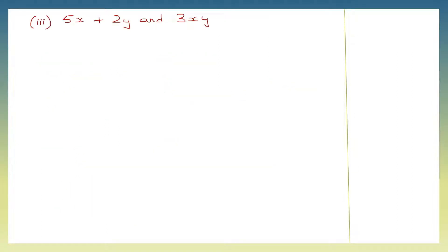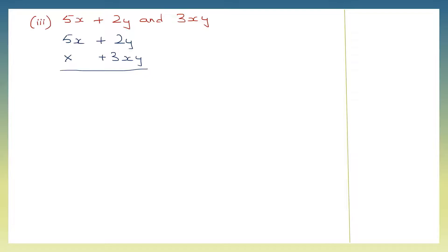Here we are going to multiply 5x plus 2y — that is a binomial. We are going to multiply this by 3xy. We will write it down vertically and do. Now we have to multiply 3xy by 2y and also by 5x.